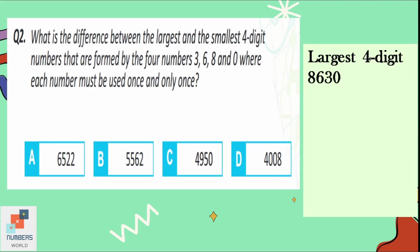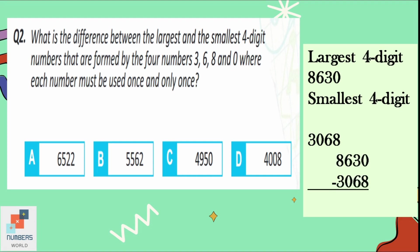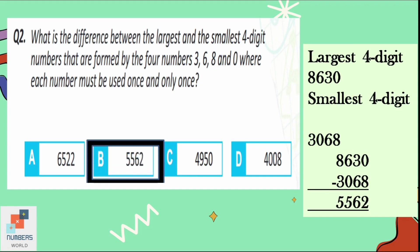To make the smallest four-digit number, we usually write the smallest digit first. But here, 0 is the smallest. If we write 0 at the first place, the number is 368, which is only a three-digit number because 0 has no value at the first place. So we write 3 first, then 0, then 6 and 8. The smallest four-digit number is 3068. The difference between 8630 and 3068 is 5562, which is our option B.